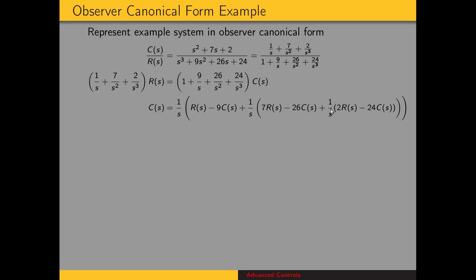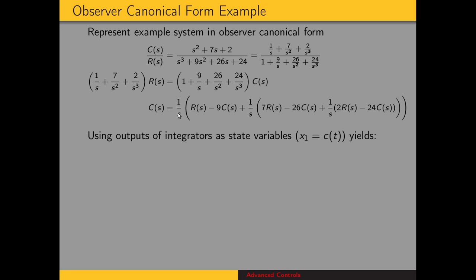We end up with three groupings, one for each power of S. The final one, for 1/S³, gives us 2R minus 24C. Now the state variables are going to be the outputs of these integrators. The output of the first integrator is X3, the output of the second integrator is X2, and the output of the third integrator is X1. We see that X1 is equal to C, so this is our output for observer canonical form. Taking the inverse Laplace transform, we can write: X3-dot equals 2R minus 24C, and since C equals X1, X3-dot is 2R minus 24X1.